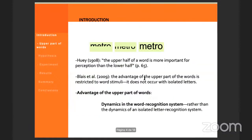However, the upper part advantage is obtained for words and not for isolated letter identification, as was found by Blaise and colleagues in 2009. Therefore, it is mainly related to the dynamics of the visual word recognition process.